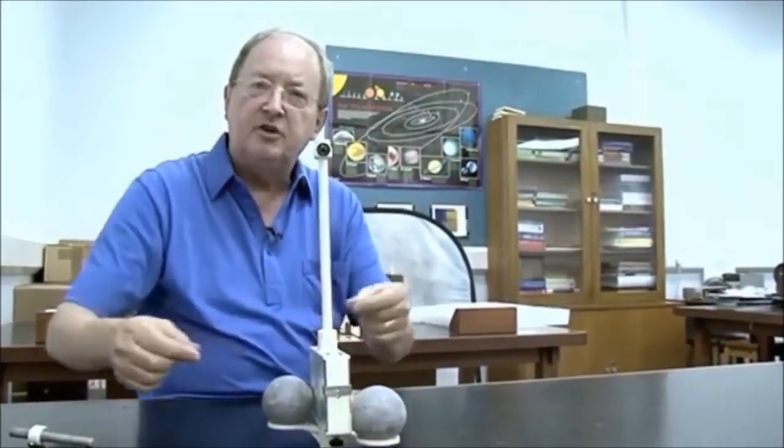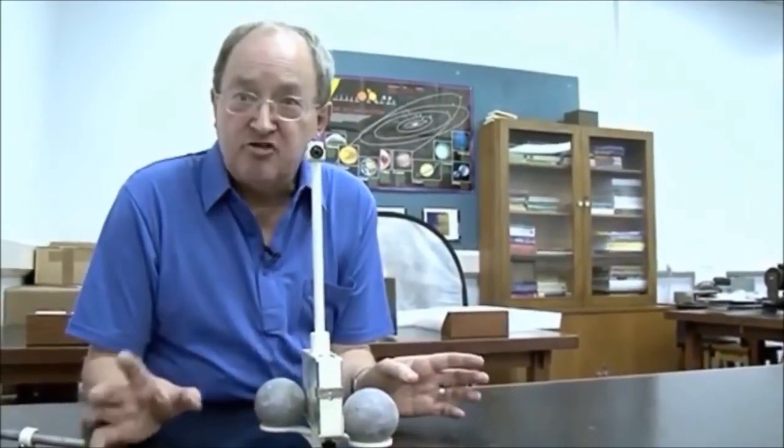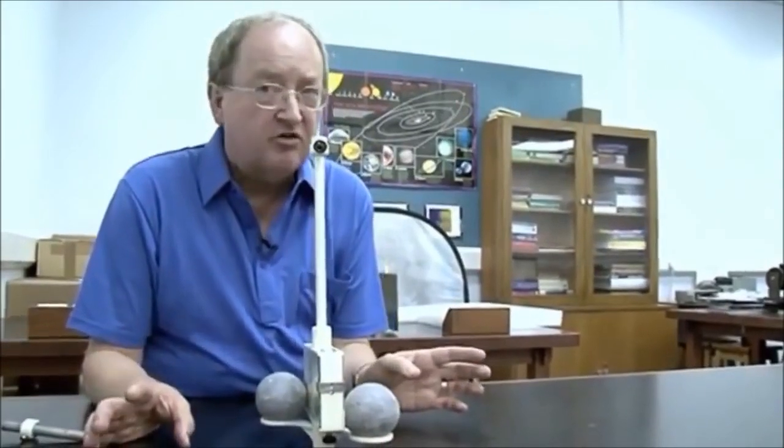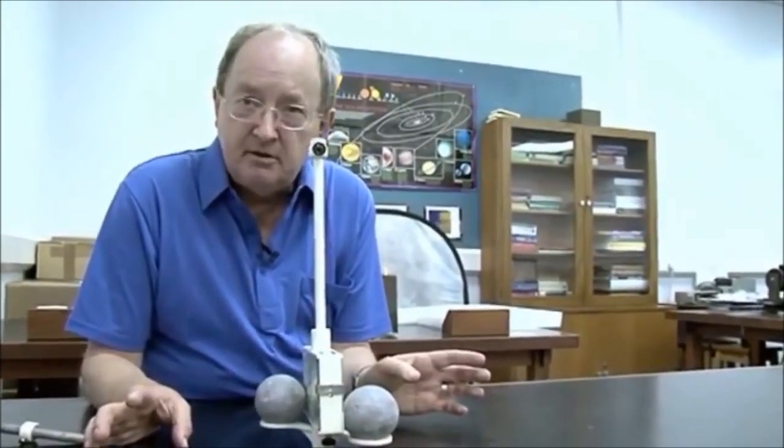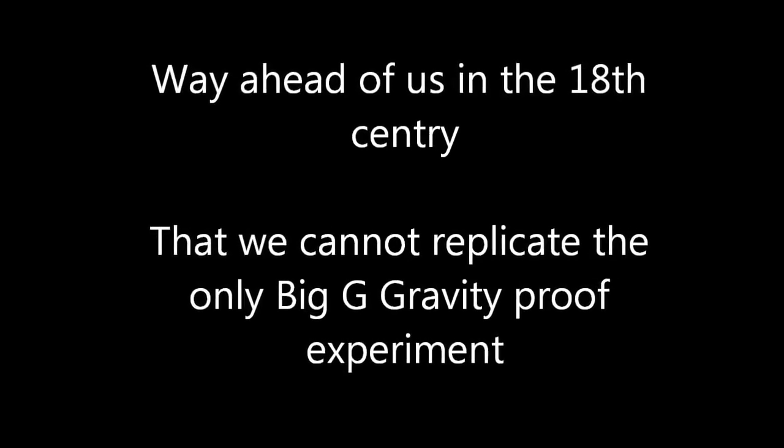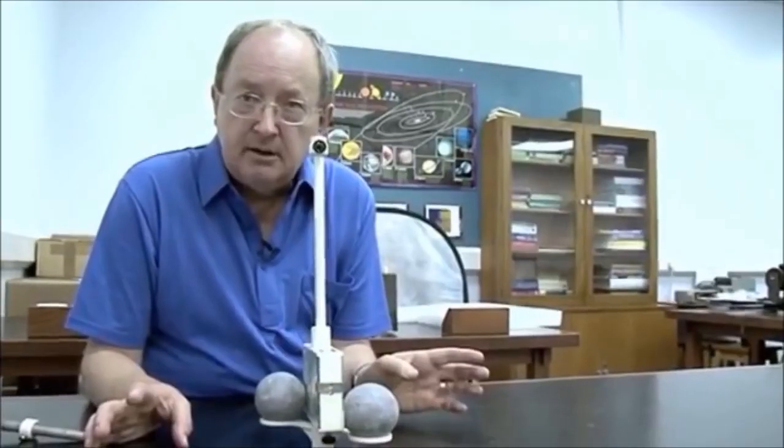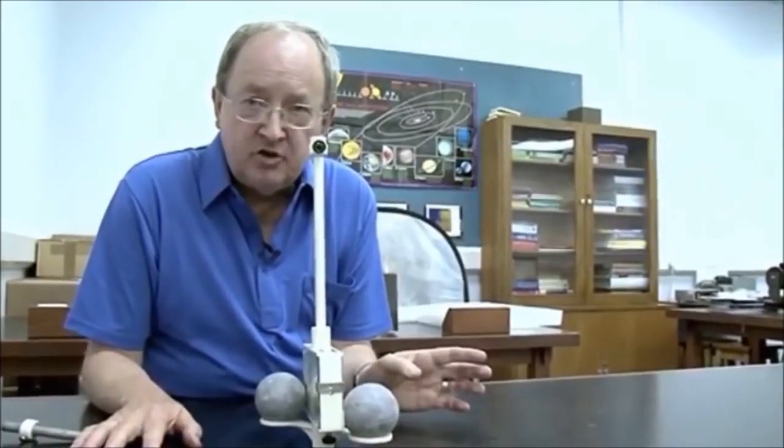Moreover, you could measure the period of oscillation of this, and from that get all the properties of the wire, the torsional constant. And that enabled him to measure big G, the gravitational constant, to an accuracy of 1%. And nobody improved on that for 100 years.